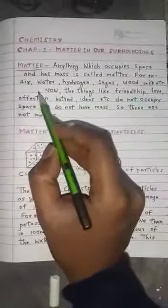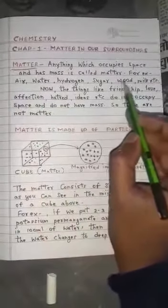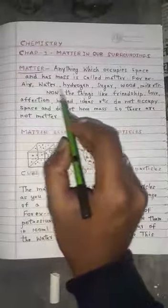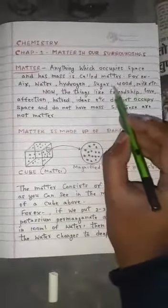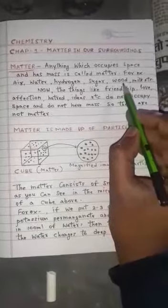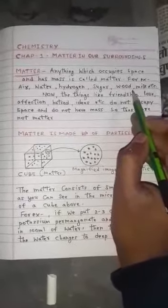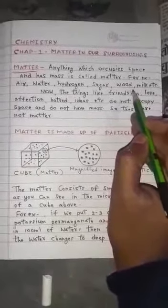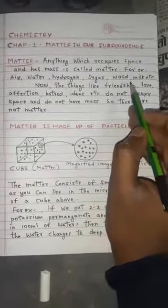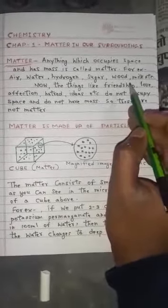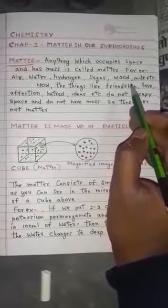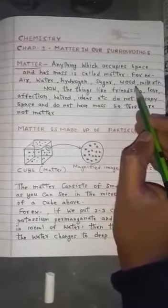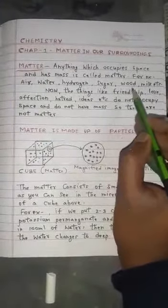For example: air, water, hydrogen, sugar, wood, milk, etc. If I take the example of wood — just a chair or a table — does it occupy space? Yes, it occupies space. Does it have mass? Yes, it has mass. It is made up of some kind of material. That material contained in the object is called mass. So, wood is a matter.